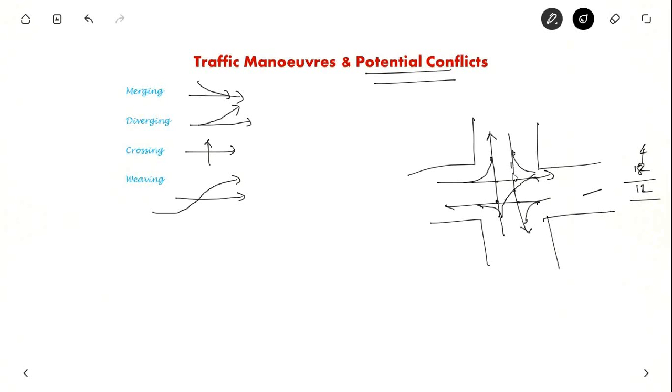And from here if you see, one, two, three and four. Here one, two, three and four. And similarly the other side as well. So you have another twelve conflicts. In total twenty-four conflicts.